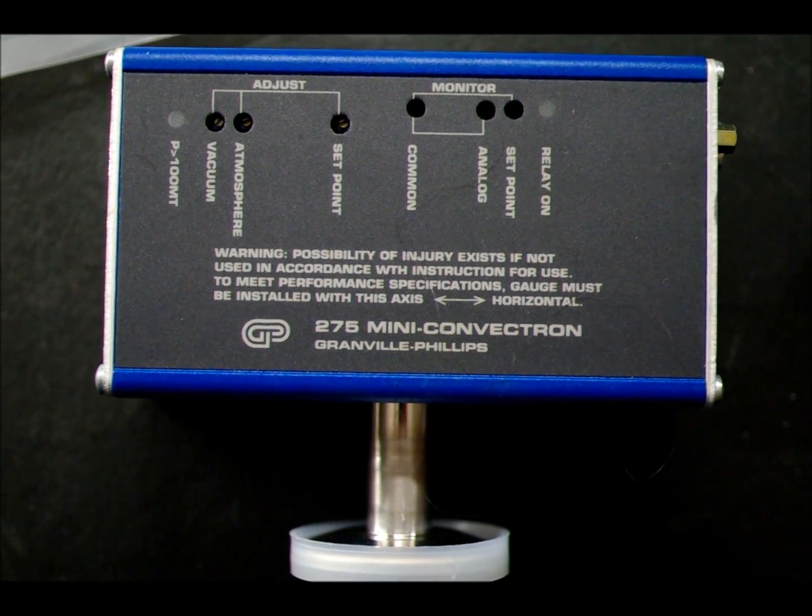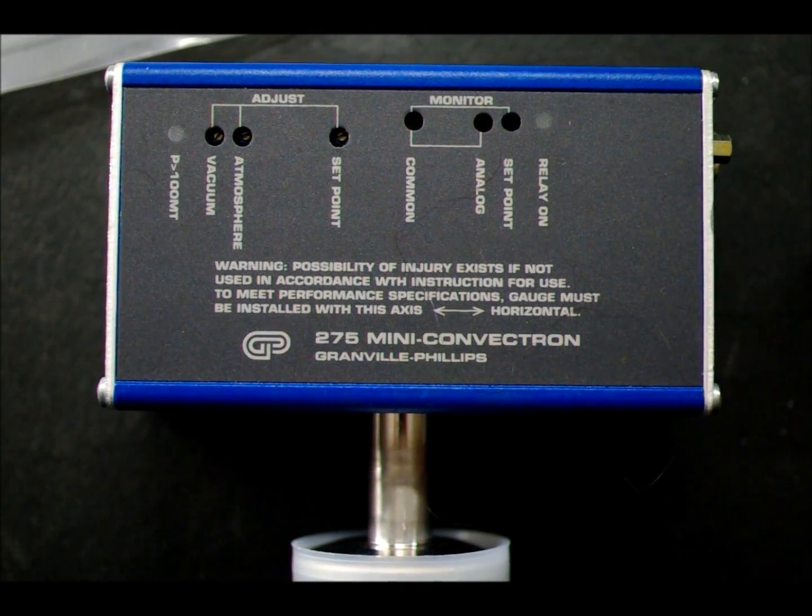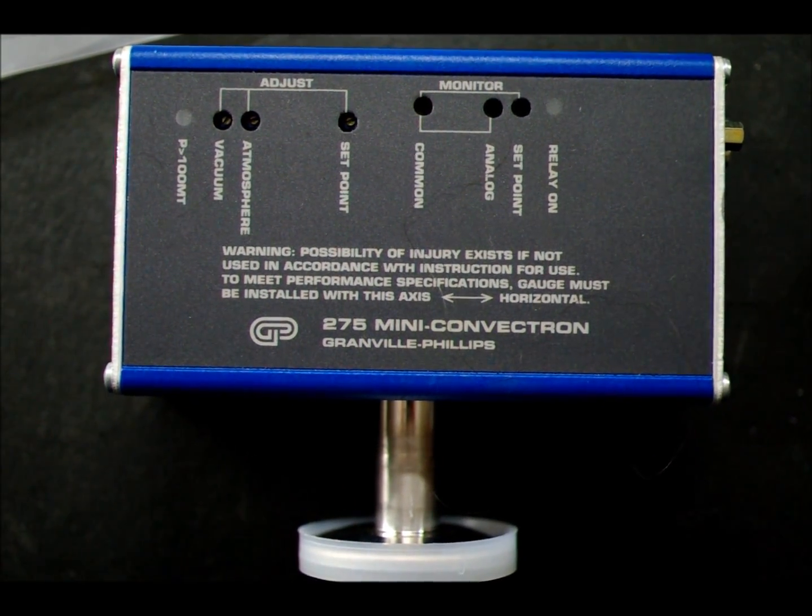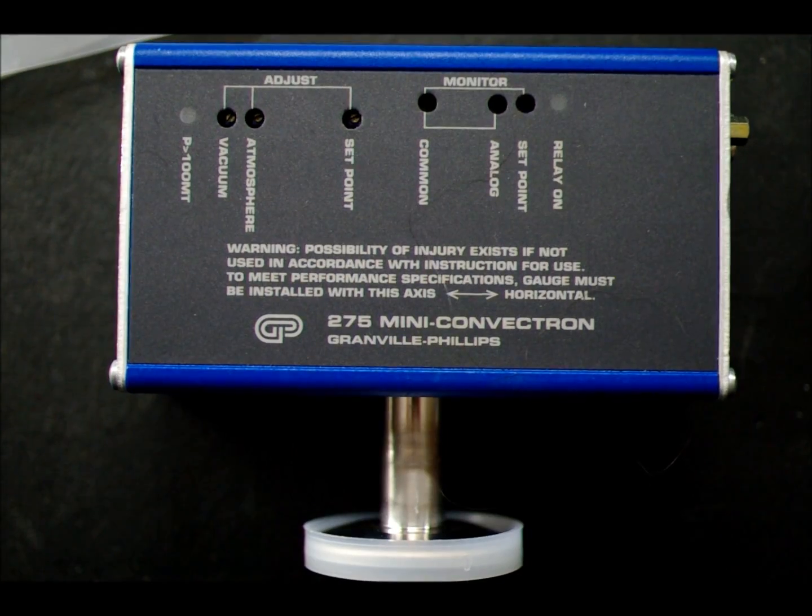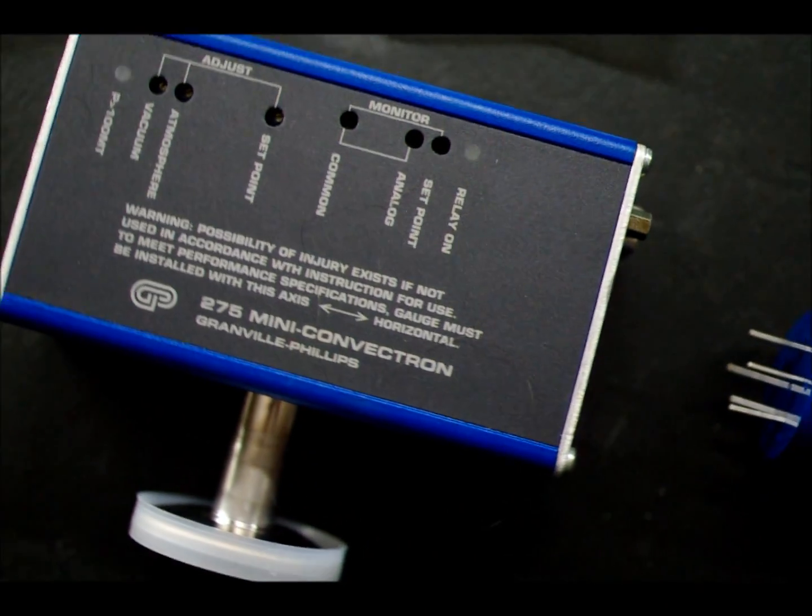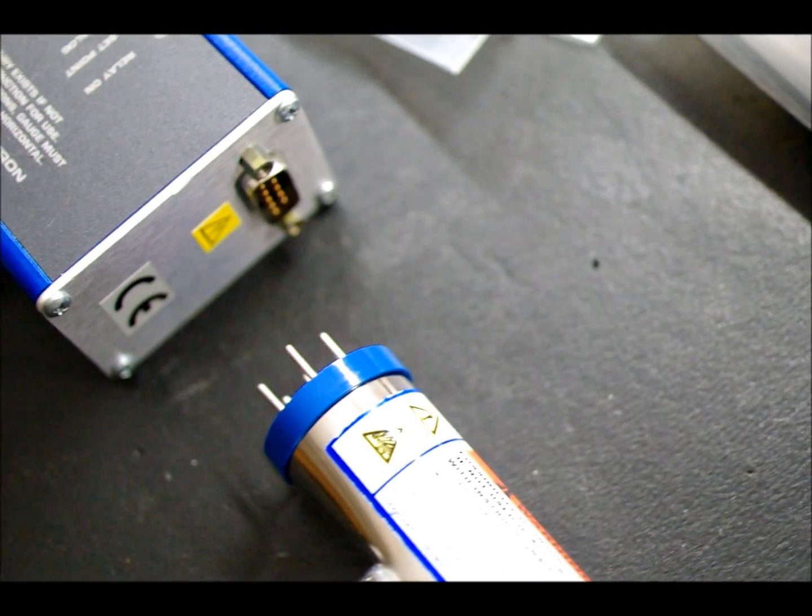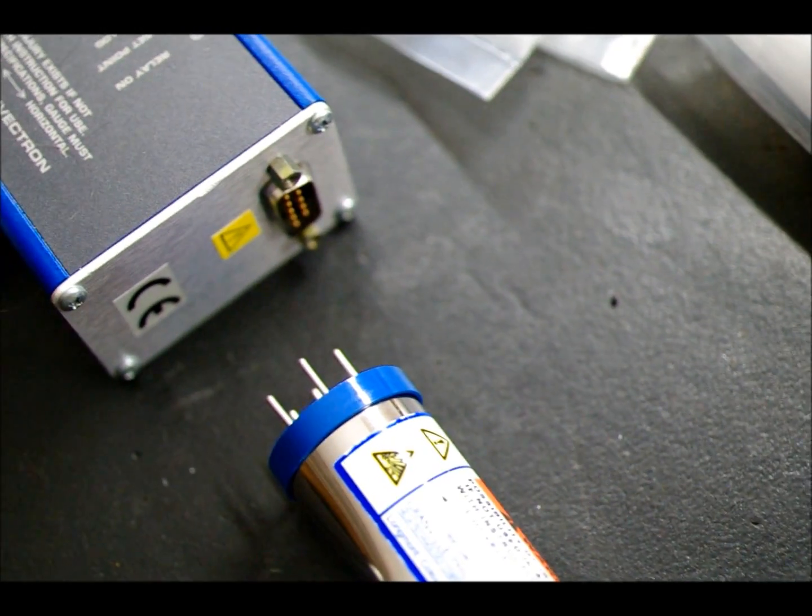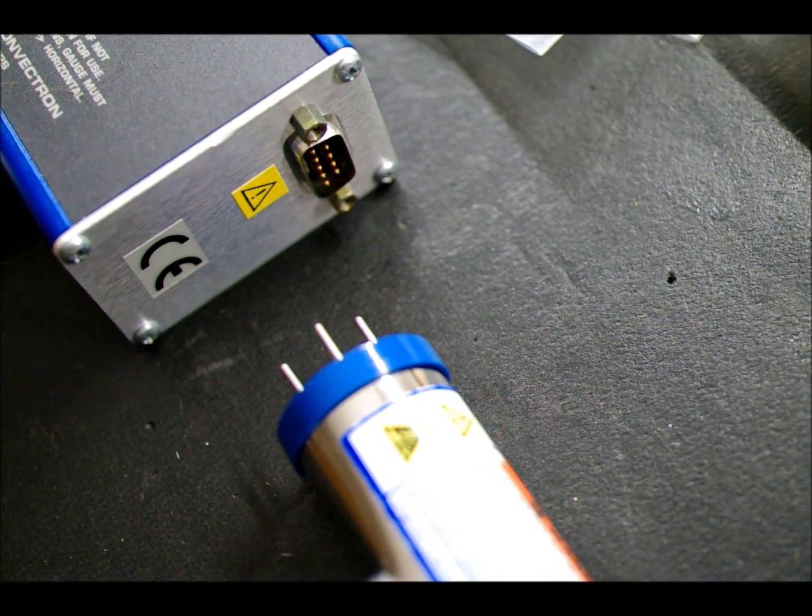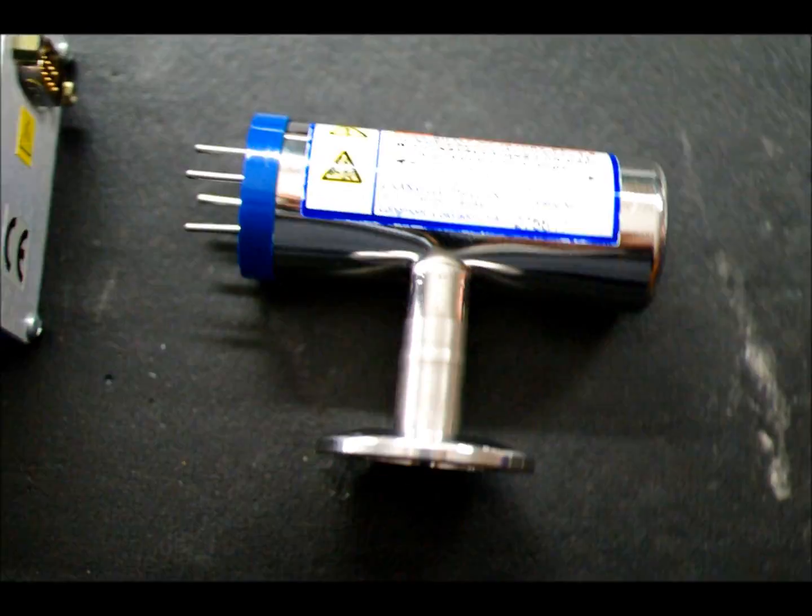A couple of notes on this Granville Phillips Mini Convectron Module. It has a set point relay which will allow us to actuate any function as a function of gas pressure. We'll talk about that more when we start using it and wiring it up. It has a 9-pin output where all the IOs and power comes in and out.